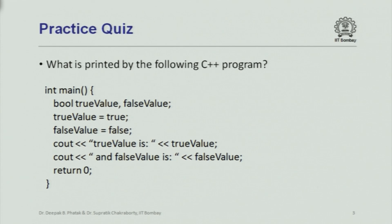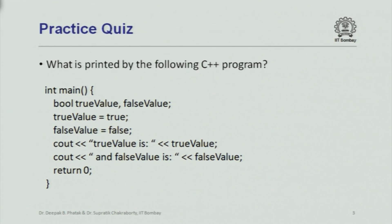It would be convenient if you could print out the strings 'true' and 'false'. We will see in a later lecture that you can do something with cout so that it actually prints the strings 'true' and 'false'. But just this statement as it is — if it is false it will print 0, and if it is true it will print 1, because the variable is declared as Boolean. Internally it may still be represented as a nonzero integer, but while printing it will print 1.